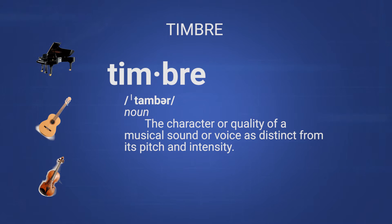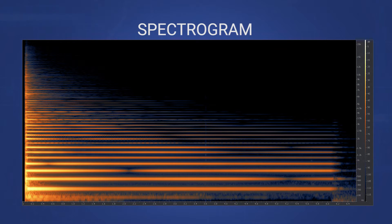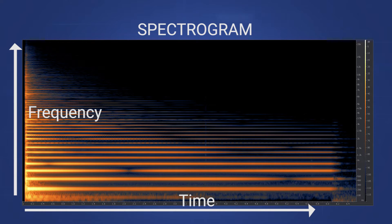In order to understand why they sound different, we're going to analyze their sound using a type of tool called a spectrogram. A spectrogram is a visualization of sound, where the x-axis represents the sound over time, and the y-axis represents the frequency content of the sound. The brightness of any given area on the graph shows us how loud that frequency is over time — the brightest being the loudest, and the darkest being the quietest.